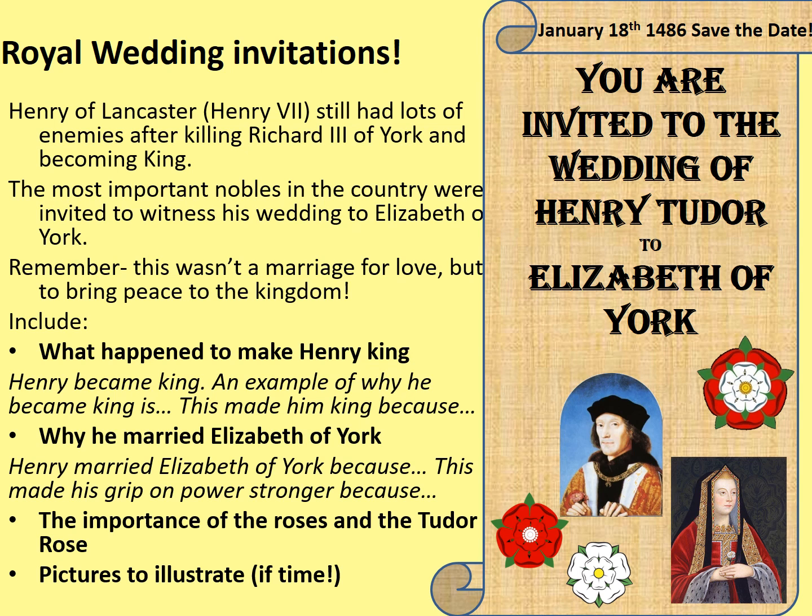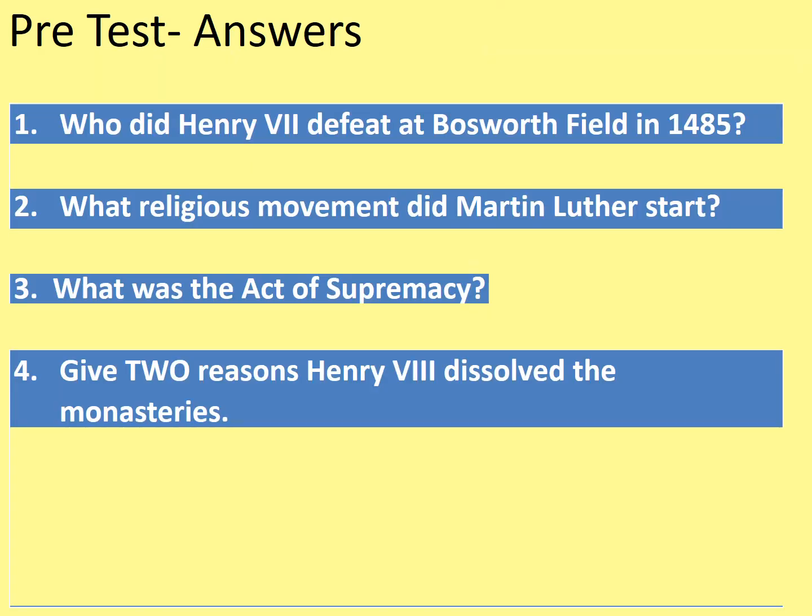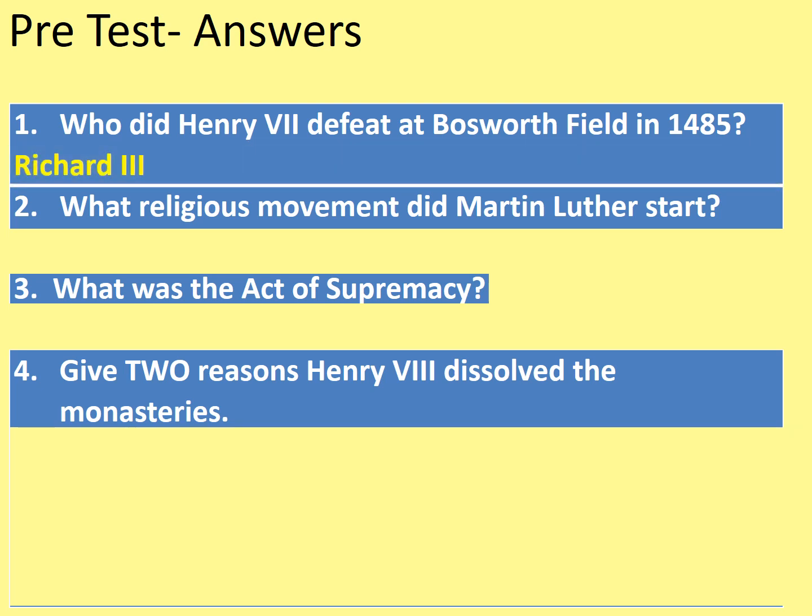You might remember at the start of the lesson we had some pre-tests — well, we're going to have a look at the answers now. Correct your answers if you got any wrong, and of course some of these you might have been completely unfamiliar with so if you end up with zero it's not the end of the world. However, if you encounter this test again and get zero again you will need to look over it and try to memorise things a bit better. So who did Henry VII defeat at the Battle of Bosworth Field in 1485? Hopefully we know that from today's lesson — it was Richard III.